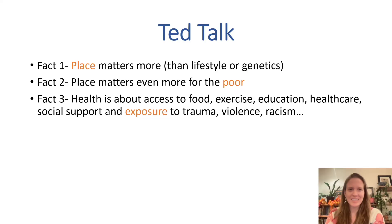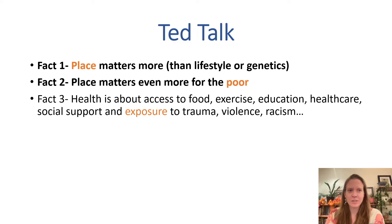So in his TED talk, Dr. Abdul Al-Sayed talks about three different facts, which I want to dive into a little bit deeper. The first two facts are really about place: place matters more than lifestyle or genetics, and place matters even more for the poor.